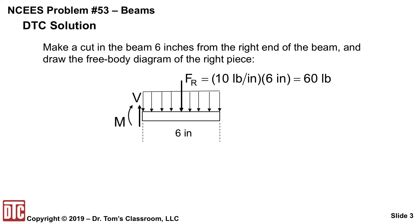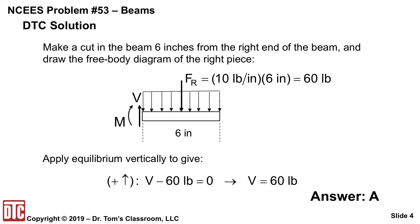The distributed load is 10 pounds per inch times 6 inches, so that gives you a 60-pound load there in the middle. On the left, you have the standard sign convention for shear force — up on a left face — and the bending moment making a smiley face, though we're not looking for a bending moment. You just apply equilibrium: the shear force V is up, 60 is down, so V equals 60 pounds, and you're done.